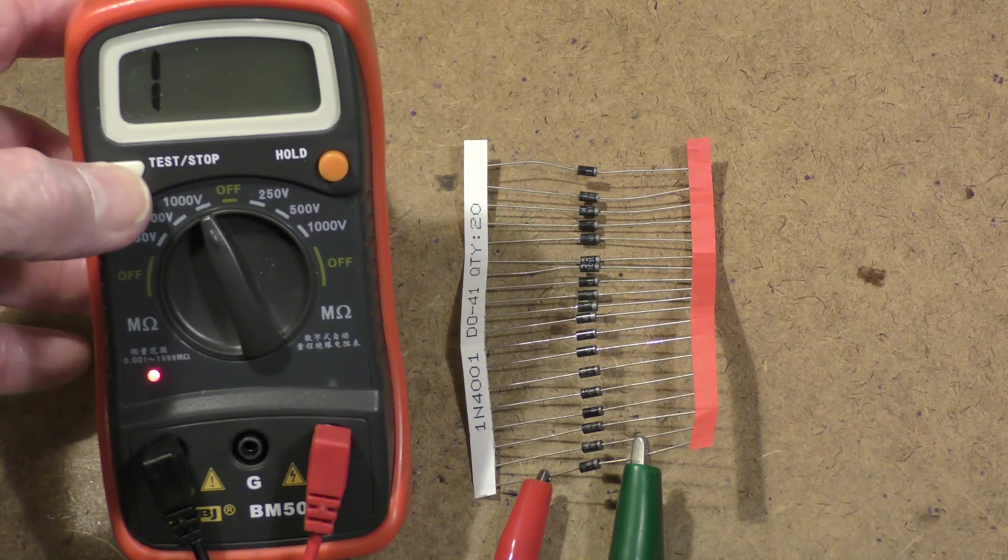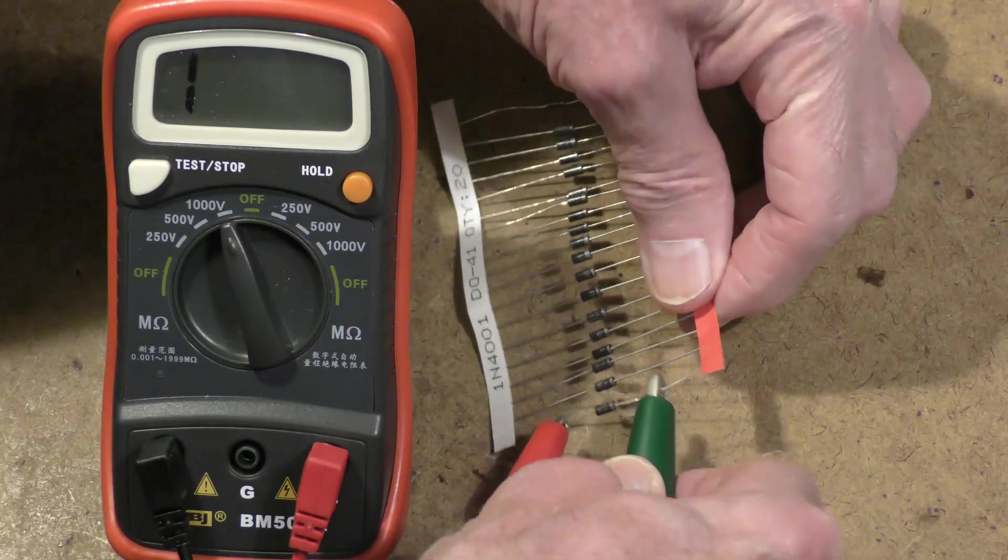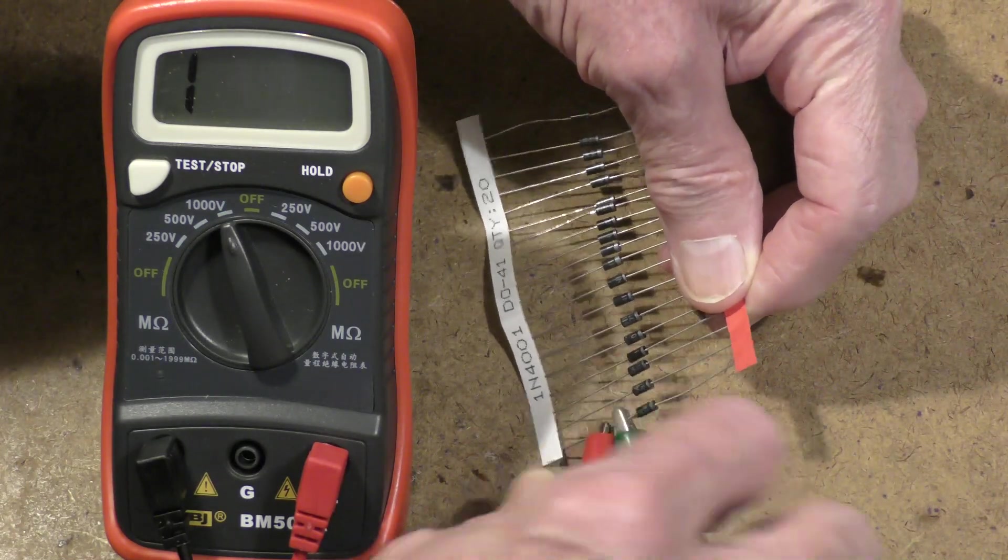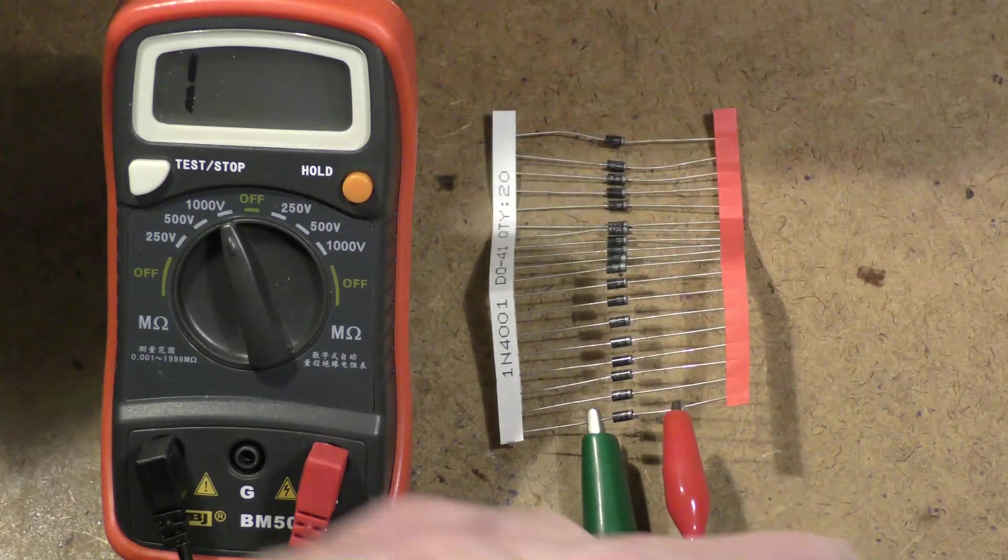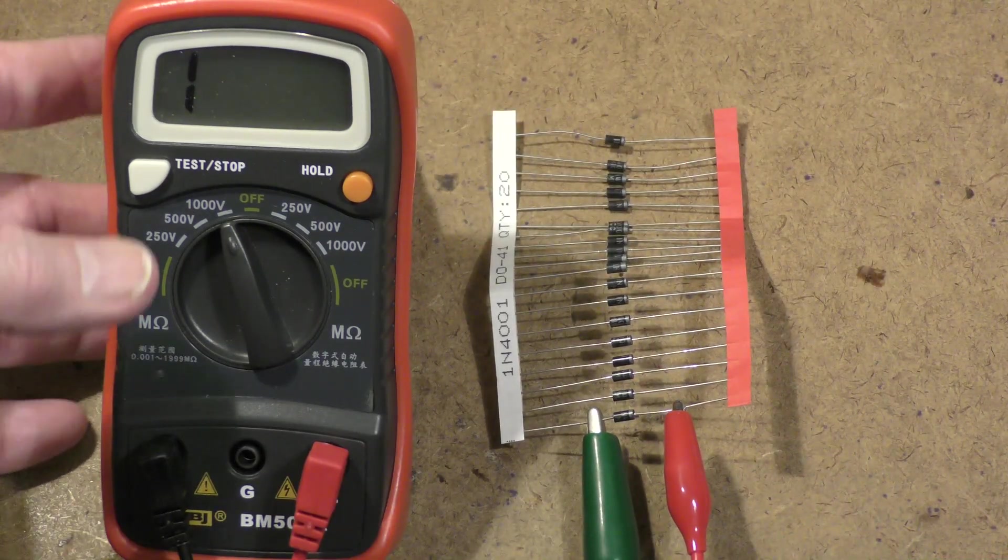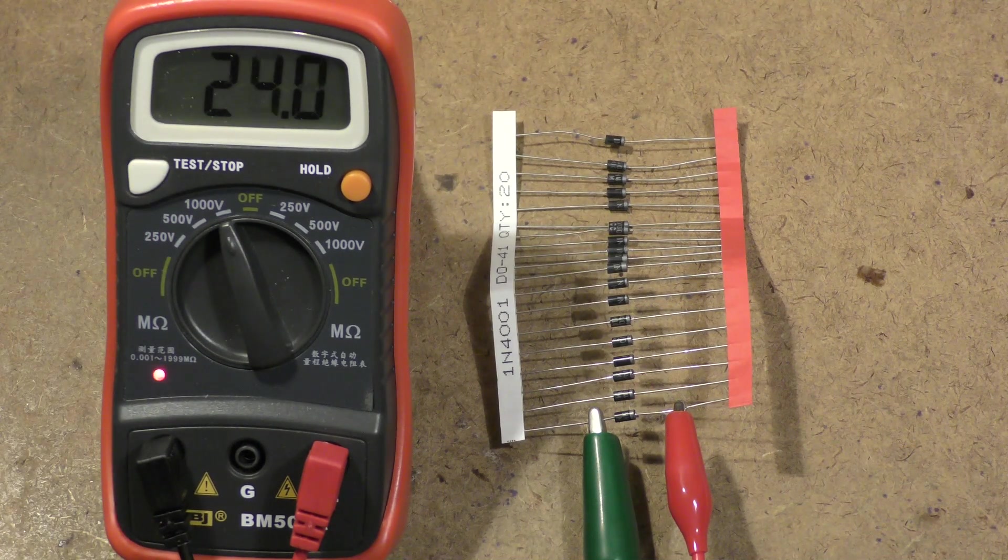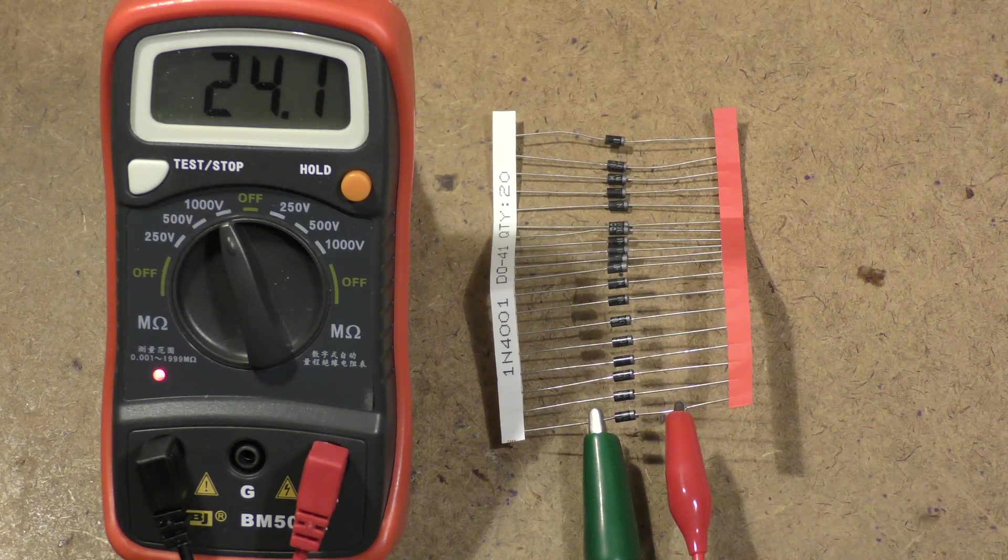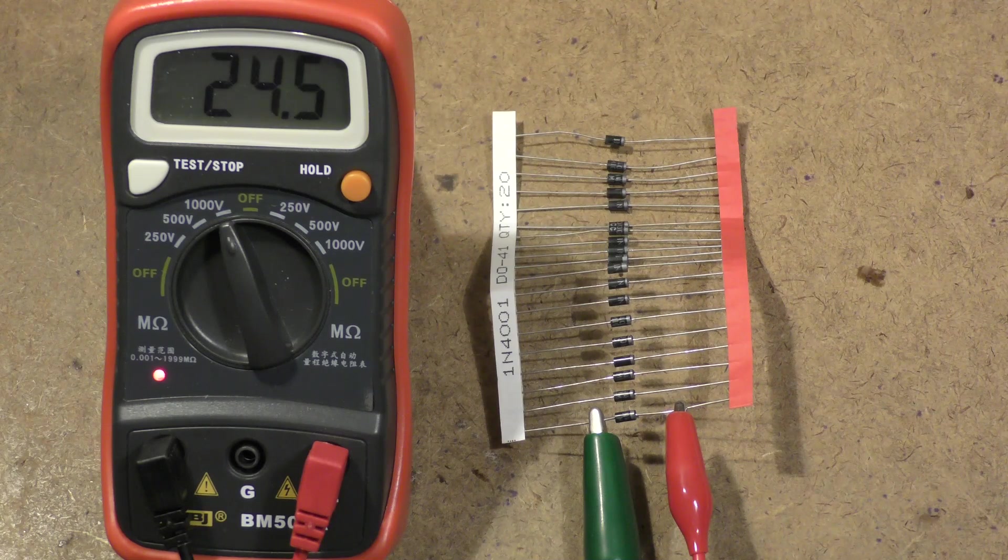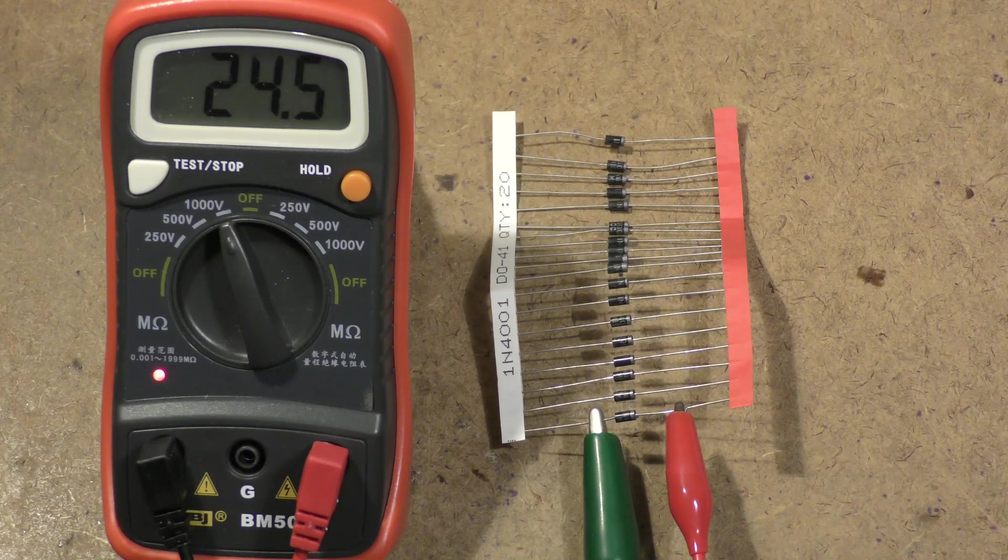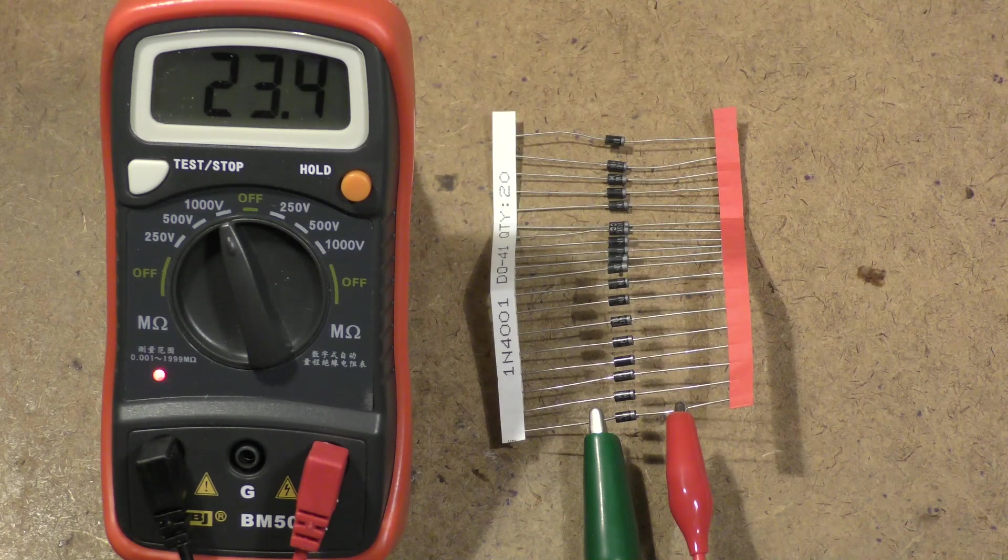Maybe that diode is just open, so let's reverse the leads and read it in the forward direction. You see we get the 22-23 megohm of the limiting resistor. What does that tell us?